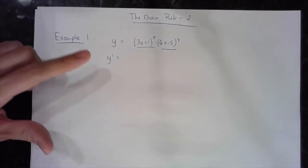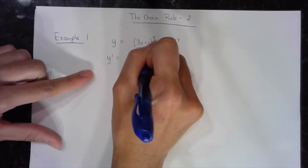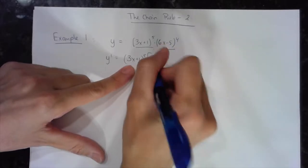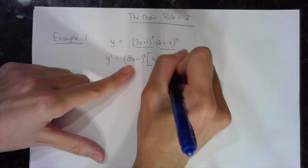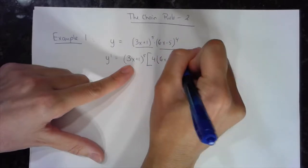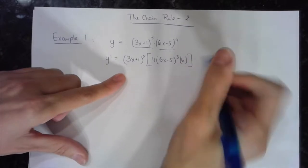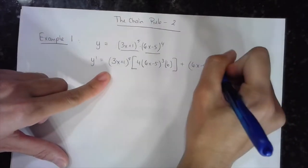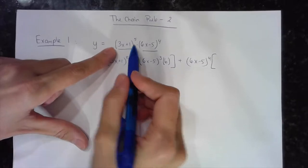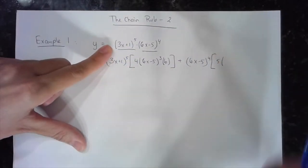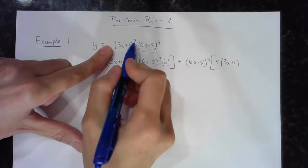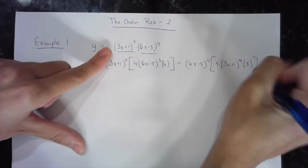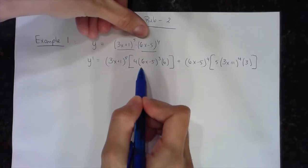So let's go ahead and do this. The product rule is: the first, (3x + 1)^5, times the derivative of the second, which is a chain rule — bring the exponent to the front, keep the base the same, subtract 1 from the exponent, and multiply by the derivative of the base.